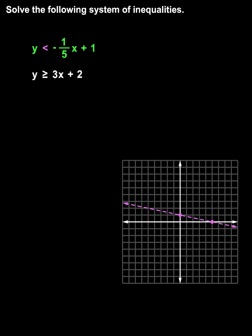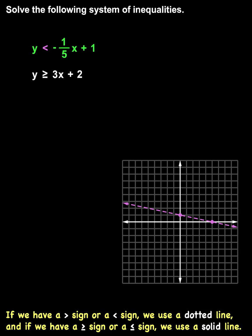It's important to understand that if we have a greater-than sign or a less-than sign, we use a dotted line. And if we have a greater-than or equal-to sign or a less-than or equal-to sign, we use a solid line.